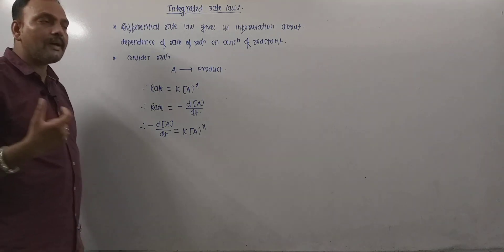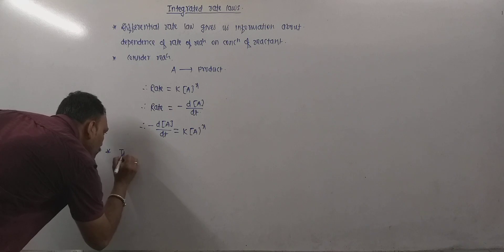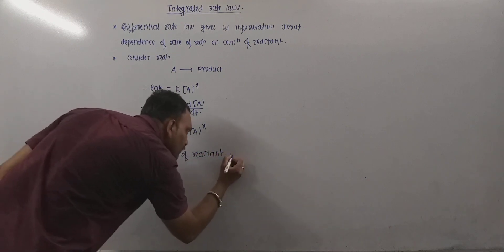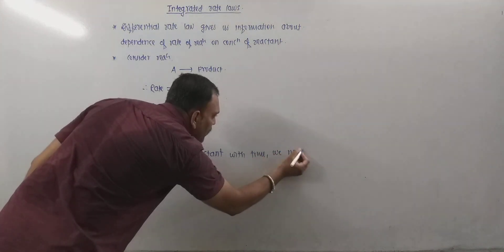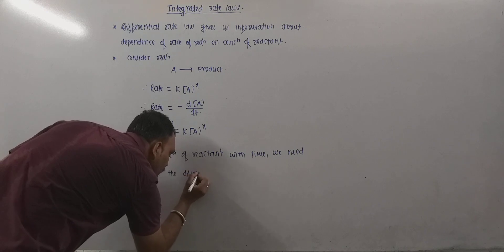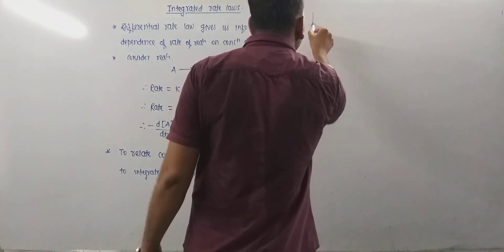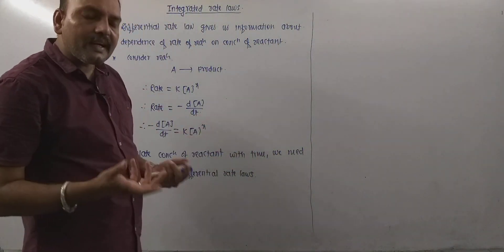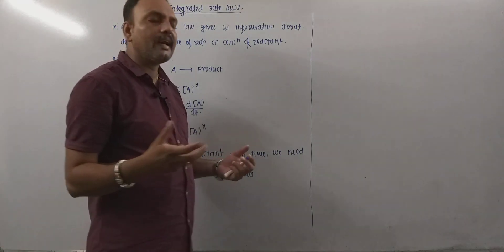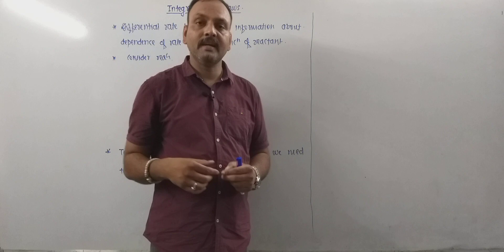Integrated rate laws are very helpful to relate the concentration of reactant and time. To relate concentration of reactant with time, we need to integrate the differential rate laws. By integrating the differential rate law, we get the integrated rate law. Integrated rate law gives us information about how time and concentration of reactant are related, and using it, one can calculate or estimate the value of rate constant and rate of reaction as well.